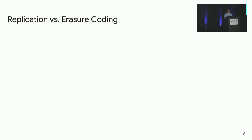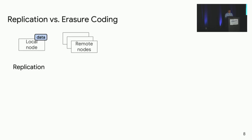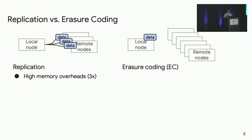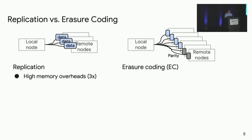There are two general approaches for making data fault-tolerant: replication or erasure coding. In the replication approach, to tolerate two remote node failures, the local node writes each piece of data into three remote nodes — but this incurs high memory overhead. In the erasure coding approach, the local node splits each piece of data into four data chunks and generates two parity chunks, writing these six chunks to different remote nodes. Erasure coding guarantees recovery from up to two remote node failures with much smaller memory usage compared to replication.